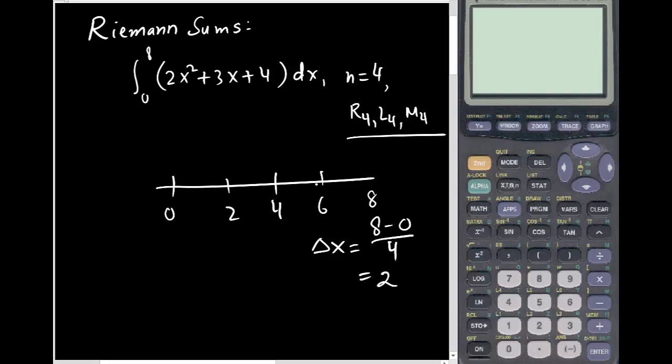Now when you are looking for Riemann sum for the right endpoints, these are my right endpoints. For right endpoints in this case, we can say X1 is 2, X2 is 4, X3 is 6, and X4 is 8.